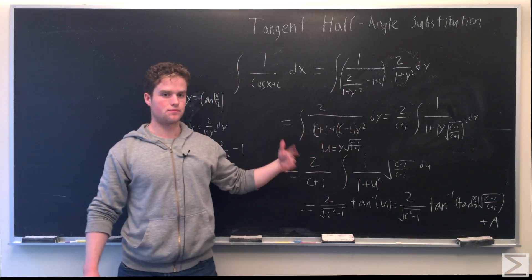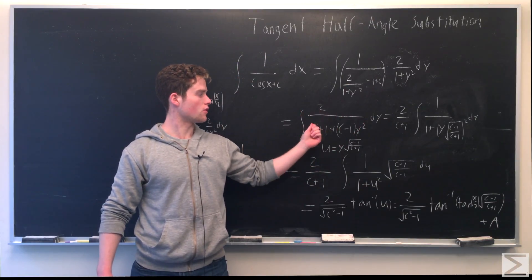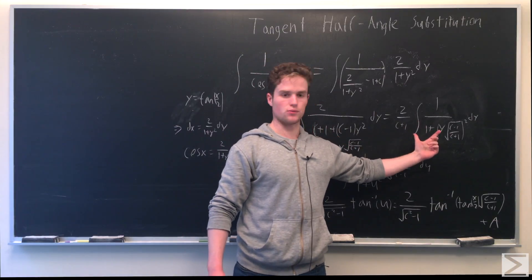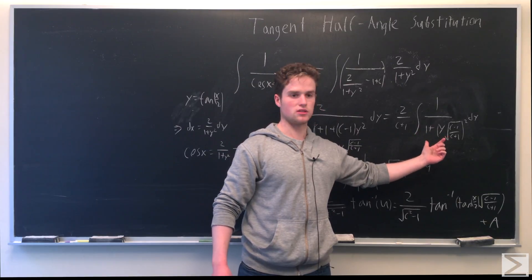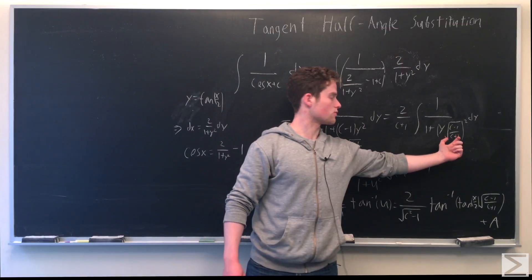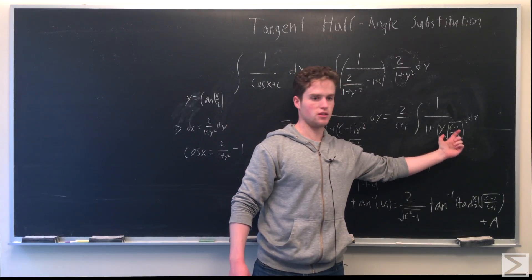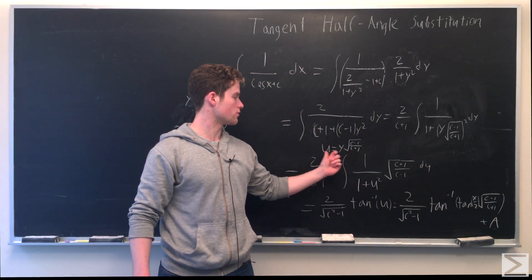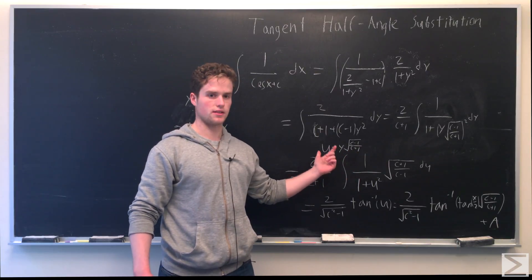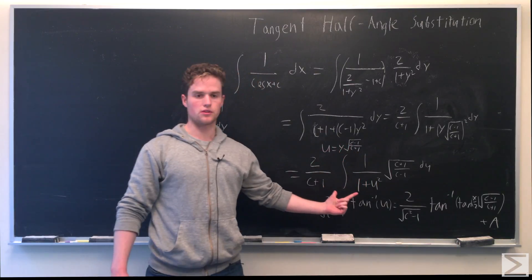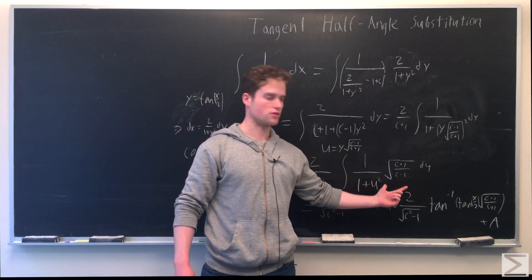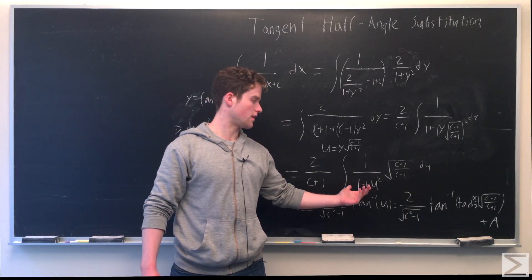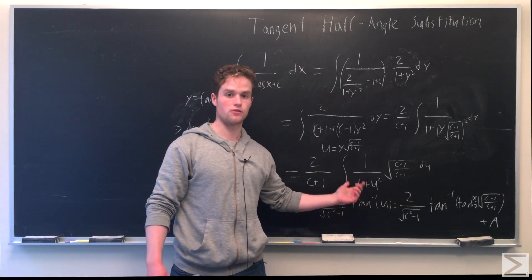Plugging in our substitution, it becomes the integral of 1 over (1 minus y² over 1 plus y²) plus c, times 2 over 1 plus y² dy. Manipulating a little bit, we end up with 2 over (c plus 1) plus (c minus 1)y² in the denominator. Factoring out 2 over (c plus 1), the integral becomes 1 over 1 plus y² times root((c minus 1)/(c plus 1)) squared dy. Making another substitution, let u equal y times root((c minus 1)/(c plus 1)). Then du equals dy times that constant, and the integral becomes the integral of 1 over 1 plus u² times root((c plus 1)/(c minus 1)) du. The integral of 1 over 1 plus u² is the well-known arctan.